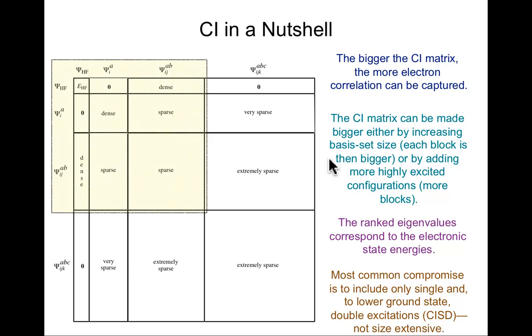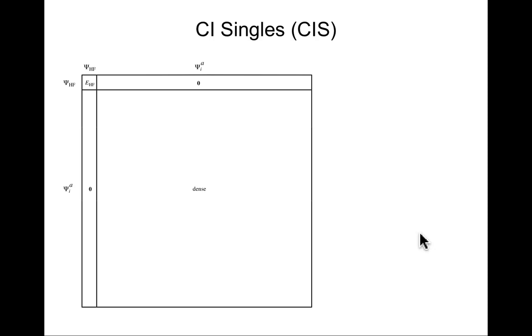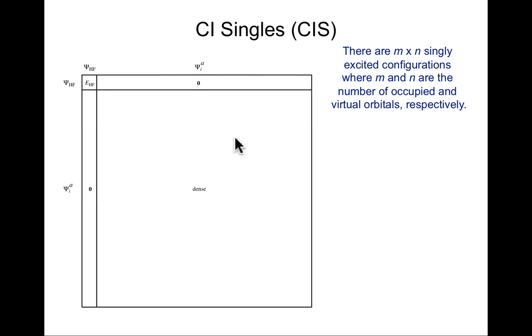To be computationally practical, a common approach is to truncate after only the double excitations. There's a downside, we talked about size extensivity. What I really want to look at is an existing model that does see a reasonable amount of use, the so-called CI singles model for excited states, not for the ground state. This is useless for the ground state because by Brillouin's theorem, there is no coupling between this eigenvalue in the CI matrix and anything involving a singly excited state. On the other hand, this is a dense block of the matrix.